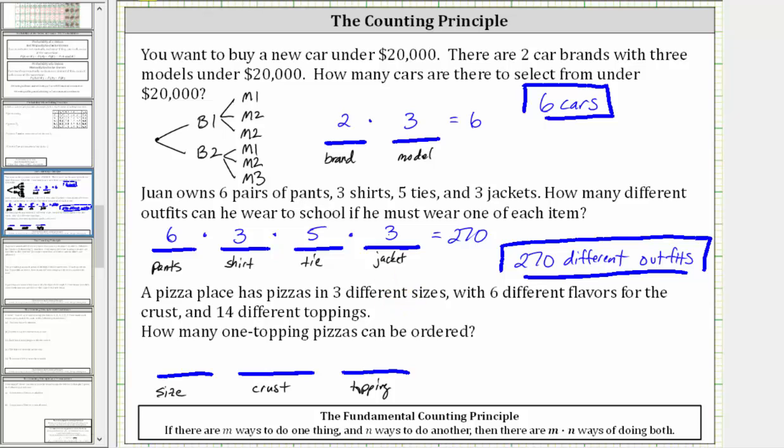Because there are three different sizes, there are three ways to select the size. Because there are six types of crust, there are six ways to select the crust. And because there are 14 toppings, there are 14 ways to select one topping.